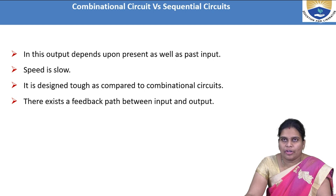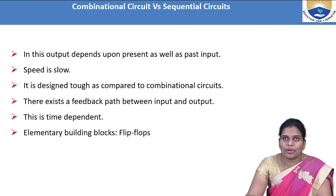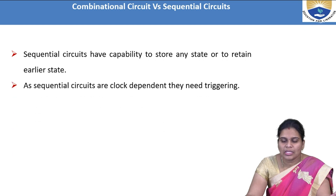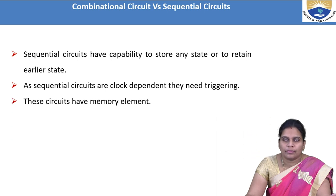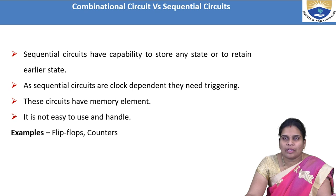Sequential circuits have a feedback path between input and output and are time-dependent. The elemental building blocks are flip-flops — whereas combinational circuits use logic gates, sequential circuits use flip-flops. Sequential circuits are mainly used for storing data, have the capability to store and return to earlier states, are clock-dependent, require triggering pulses, have memory elements, and are not easy to use and handle. Examples are flip-flops and counters.